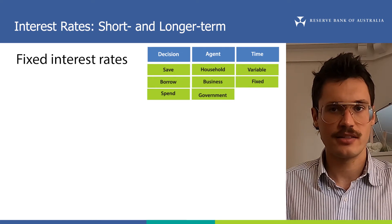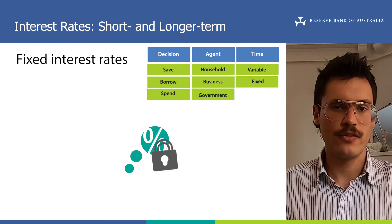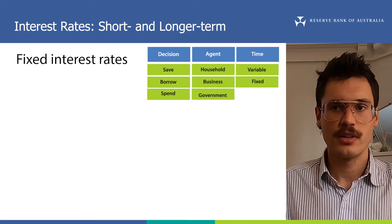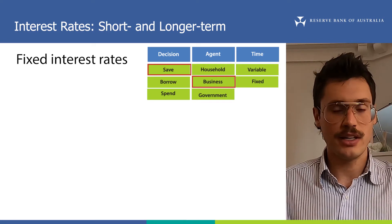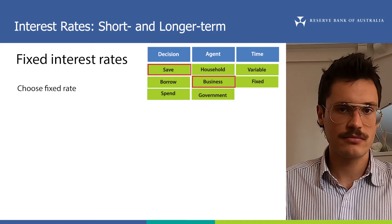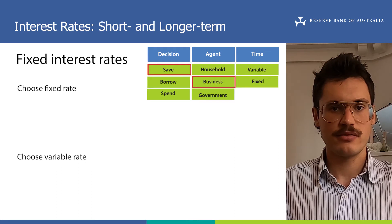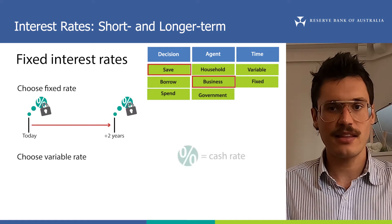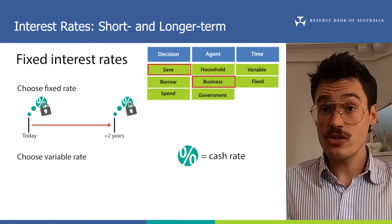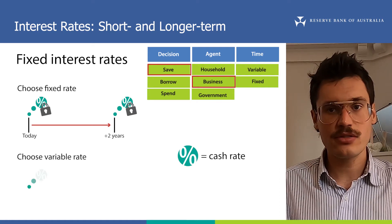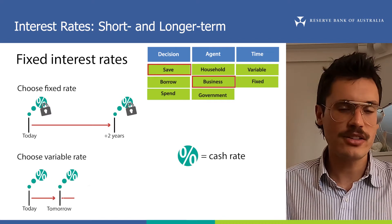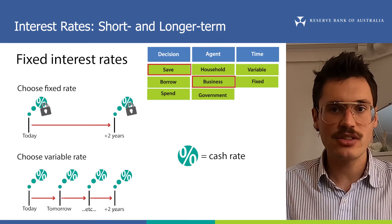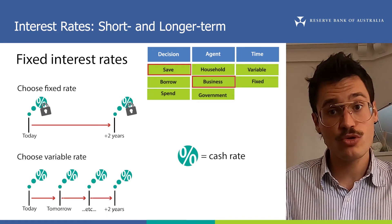So let's talk more about variable and fixed interest rates. A fixed interest rate is locked in once it's set for a fixed period of time. To understand fixed rates, it's easiest to compare them with variable interest rates. Suppose a business wants to save some money at the bank for two years. They have to make a decision about whether to save at a fixed rate or at a variable rate. If they choose the fixed rate deposit, the interest rate the bank offers them today will be the interest rate they receive over the whole two years — let's say that rate equals the cash rate today. If they choose the variable rate deposit, the interest rate the bank offers them today could change each day over the next two years, equal to whatever the cash rate is each day.